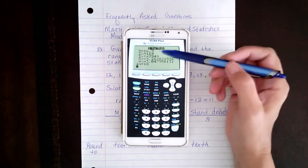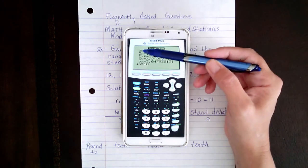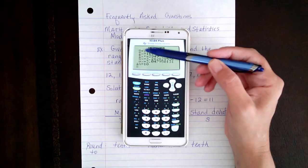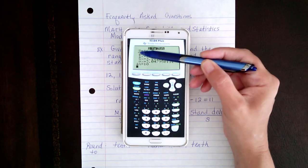And here we have a list of various symbols, and the first symbol is pronounced X bar, which stands for the mean.